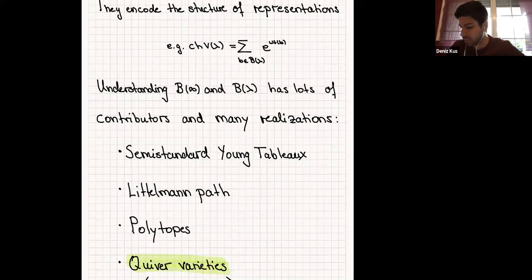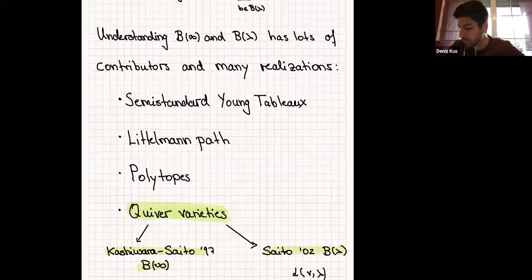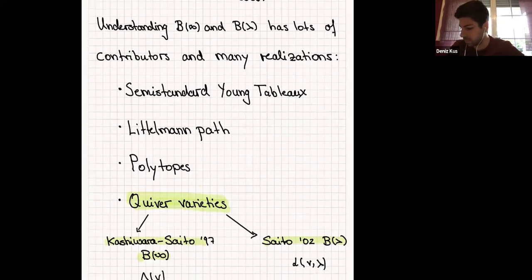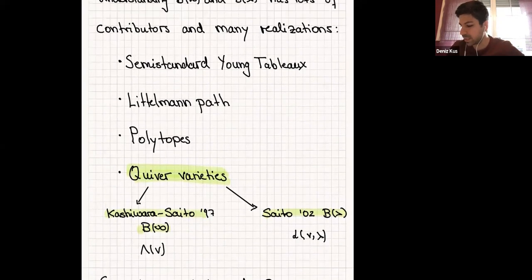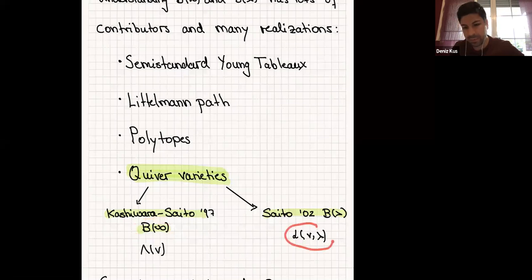This goes back to Kashiwara and Saito when working with B∞, and to Saito in 2002 when working with B(λ). That is why you have two geometric objects: Lusztig's quiver variety to realize B∞, and Nakajima's quiver variety to realize B(λ).